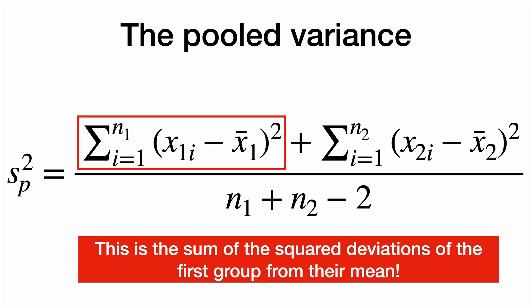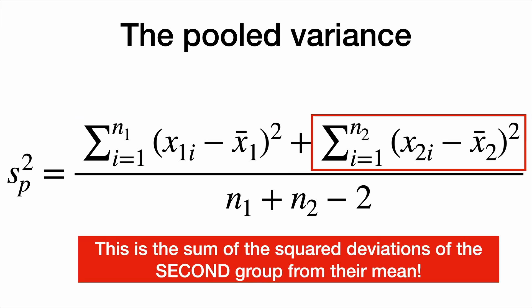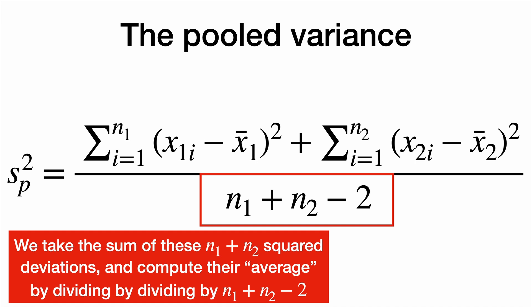This is the sum of the squared deviations of the first group from their mean, and we add them to the sum of the squared deviations of the second group from their mean. And then we take the sum of these n1 plus n2 squared deviations, and we compute their average by dividing by n1 plus n2 minus 2. So it's the degrees of freedom, which has a minus 2. So it's not exactly the sample size, but this is an average.